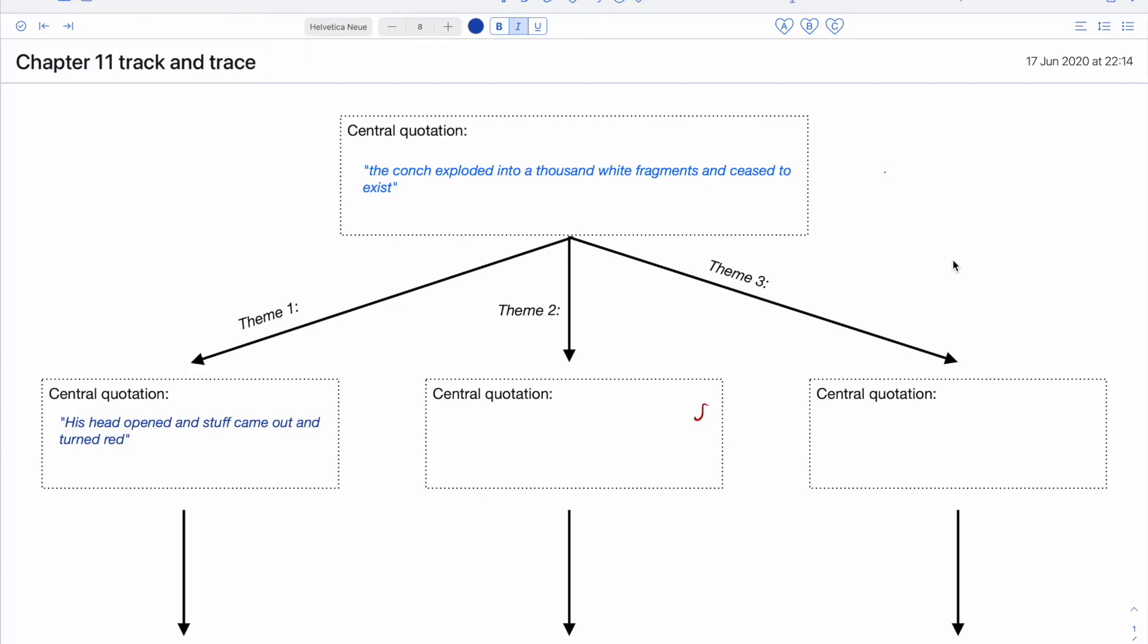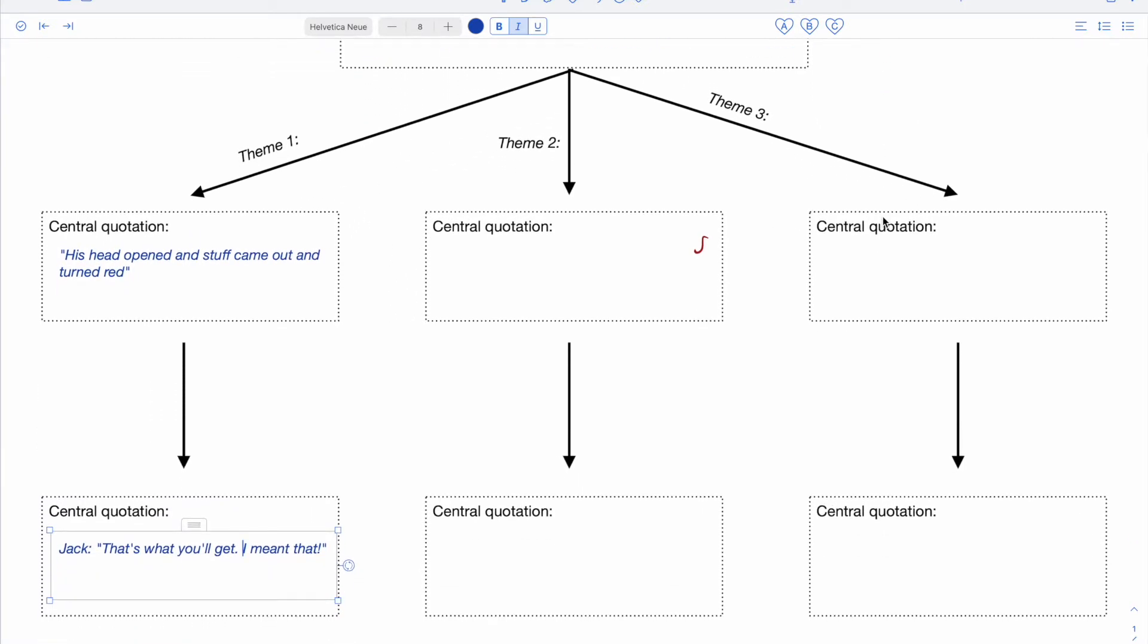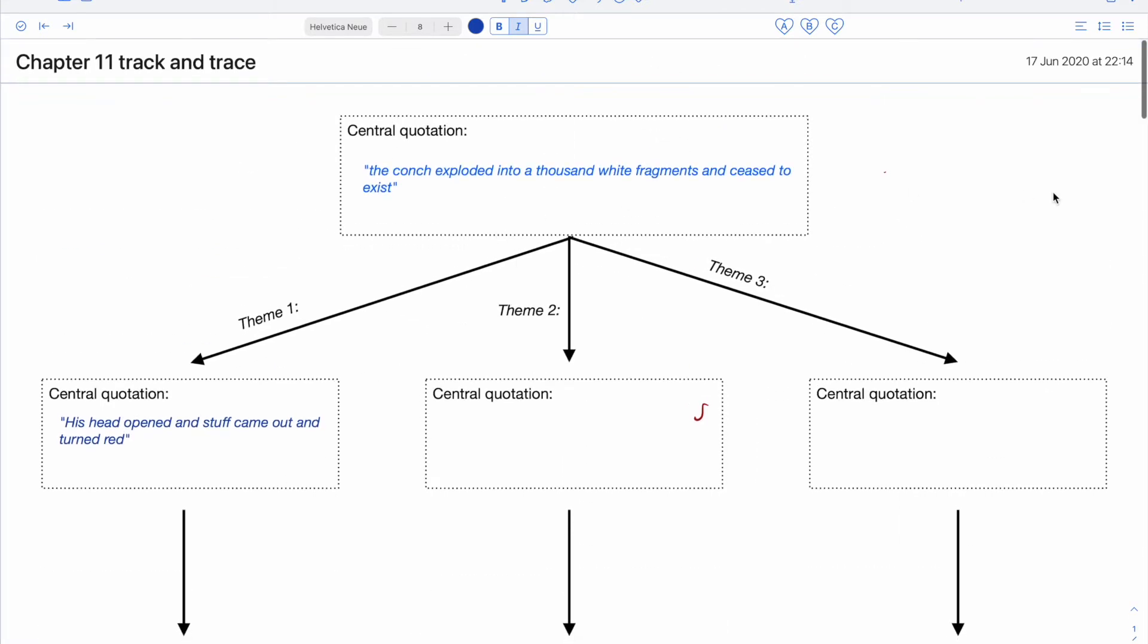We have three key quotations here, all taken from a very similar section of the novel, a very similar section of the chapter, because it's particularly dense and rich with symbolism that we need to look at. Undoubtedly you could explore more widely than this and add in other quotations and other themes if you were to create a resource that looks very much like this. So we'll start off with 'the conch exploded into a thousand white fragments and ceased to exist,' then the description of Piggy as 'his head opened and stuff came out and turned red,' followed by Jack's exclamation 'is that what you'll get? I meant that.'